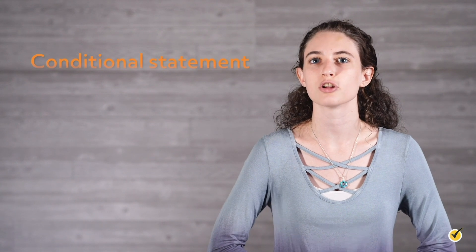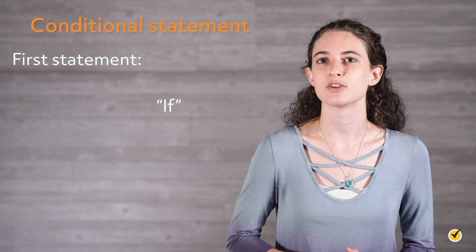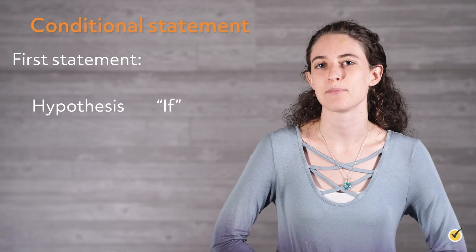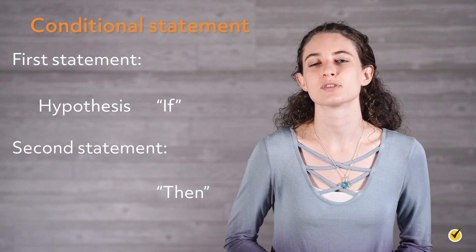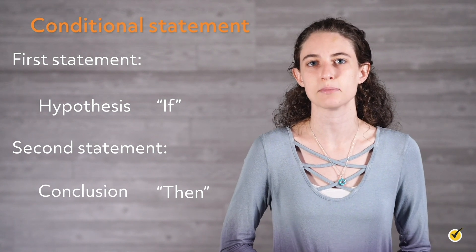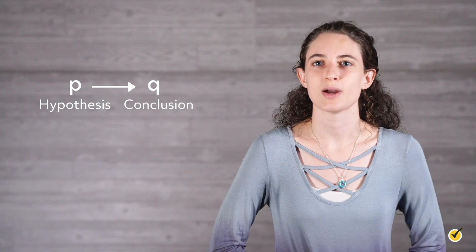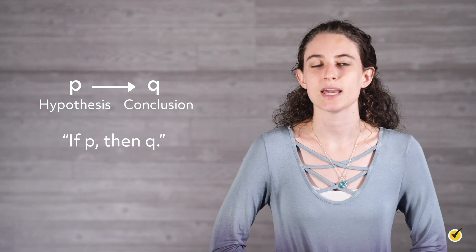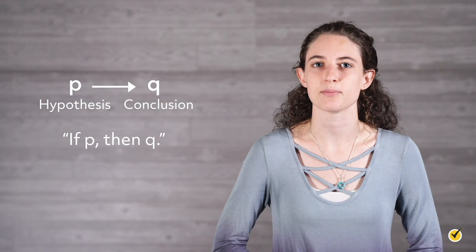Two independent statements can be related to each other in a logic structure called a conditional statement. The first statement is presented with 'if' and is referred to as a hypothesis. The second statement is linked with 'then' and is known as the conclusion. The notation associated with conditional statements typically uses the variable p for the hypothesis statement and q for the conclusion. In words, this would be read as: if p, then q.